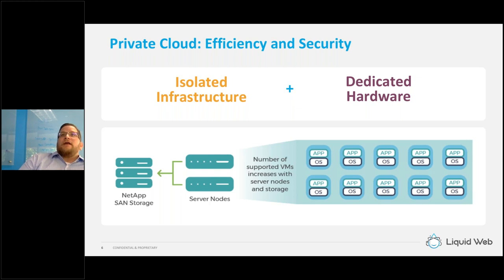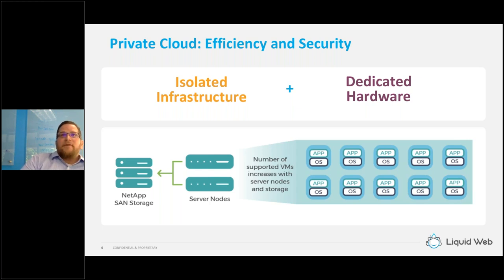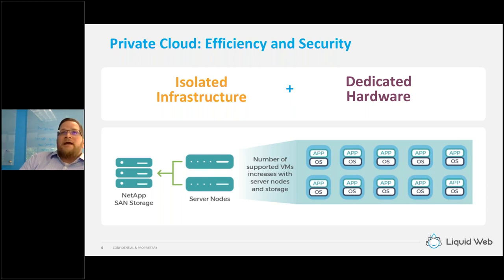Without getting incredibly technical, here's a quick overview of a representative architecture of our VMware private cloud solution. Across a 10-gig private network, we have NetApp all-flash storage. We start with two server nodes. A very specific design decision was made: we only do HA. We're not running a single server with all your VMs packed onto it — because if that server fails, you're down. That's certainly the way a lot of people start building VMware, but it doesn't really constitute a private cloud.